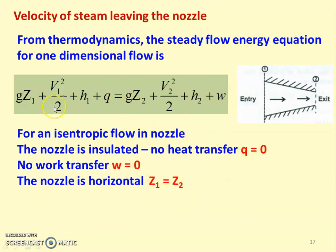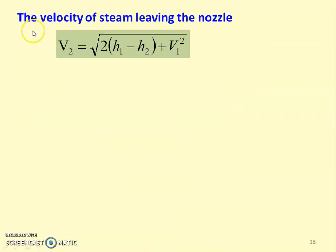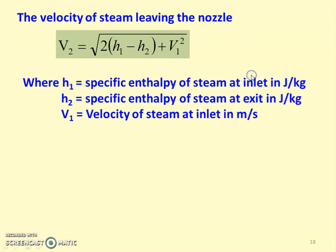Substituting these three conditions into the equation, the steady flow energy equation for the nozzle becomes: V1²/2 + H1 = V2²/2 + H2. Rearranging, the velocity of steam leaving the nozzle is V2 = √(2·(H1 − H2) + V1²), where H1 and H2 are specific enthalpies in joules per kilogram and V1 is the inlet velocity in meters per second. Since specific enthalpy is available in steam tables in kilojoules per kilogram, we must multiply by 1000.